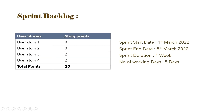Let us consider a sprint backlog which has 4 user stories. For each user story, story points have been assigned, totaling 20 story points. The sprint start date is 1st March 2022 and the sprint end date is 8th March 2022. The sprint duration is 1 week, with 5 working days, excluding Saturday and Sunday.